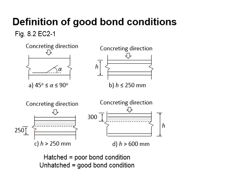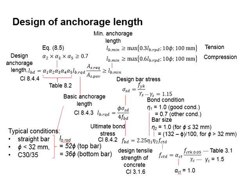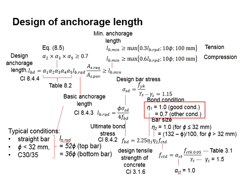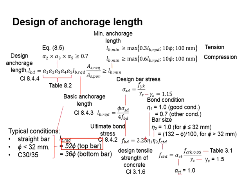For regions with good bond conditions, the required anchorage length is shorter. For regions with poor bond conditions, the required anchorage length is longer. As covered in the reinforced concrete design module chapter 5, the basic anchorage length differs due to good and poor bond conditions, and as a result the design anchorage length differs. Under typical conditions — referring to straight bars with a diameter less than 32 mm and Grade 30 concrete — the top bar requires at least 52 times the bar diameter, and the bottom bar requires at least 36 times the bar diameter.